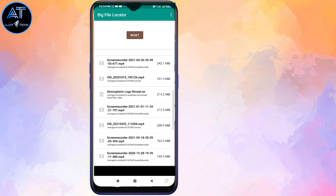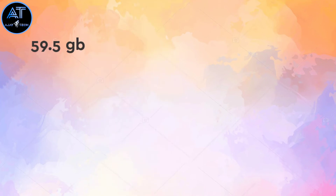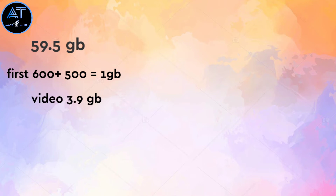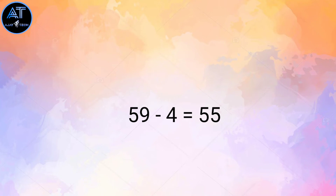We will explain each entry. I have 59.5GB. First, we will delete a cache of around 600MB or 500MB. Next, we will delete a cache for the next 4GB. If you have 4GB to delete, you will have 55GB remaining in the app.